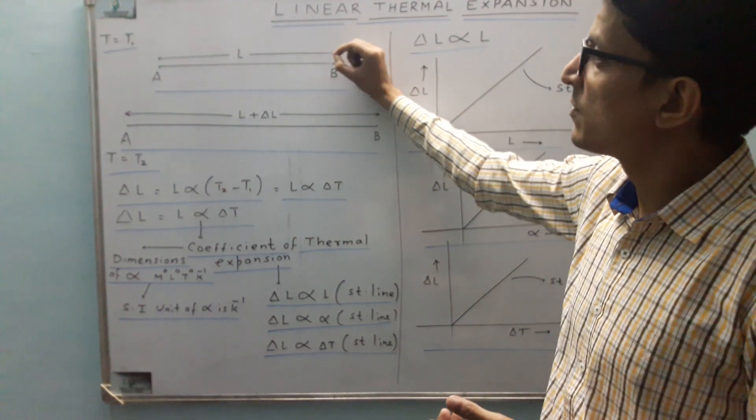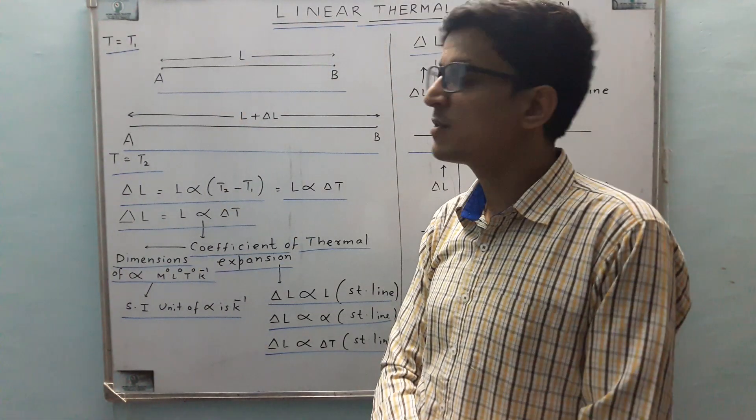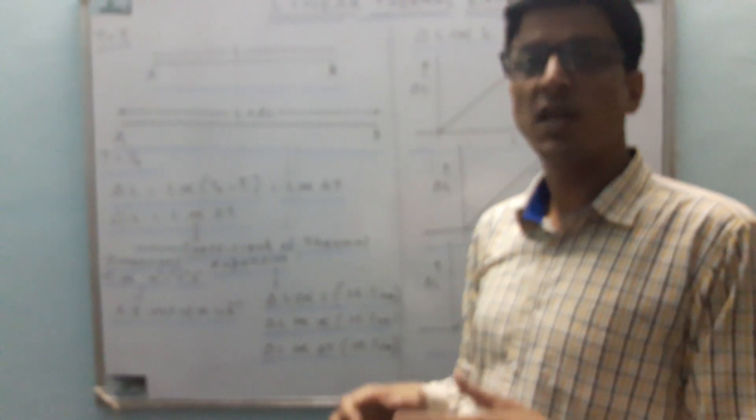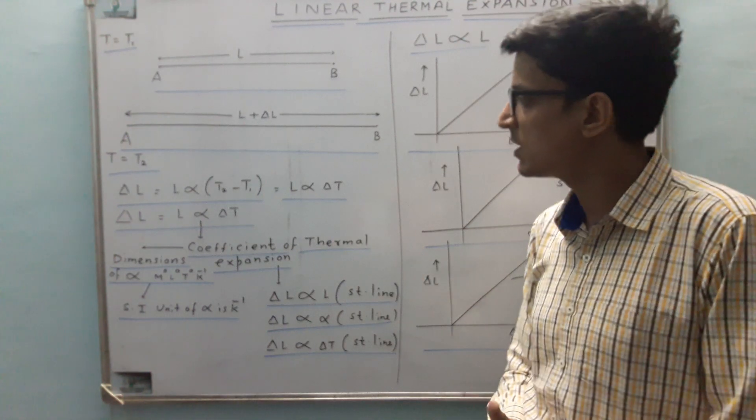So suppose that there is a rod of length L, and the temperature is T is equal to T1. So if you increase the temperature to T2, its length will change. Suppose the final length is L plus delta L. So we have a mathematical relation that delta L is equal to L alpha into T2 minus T1, which is L alpha into delta T.